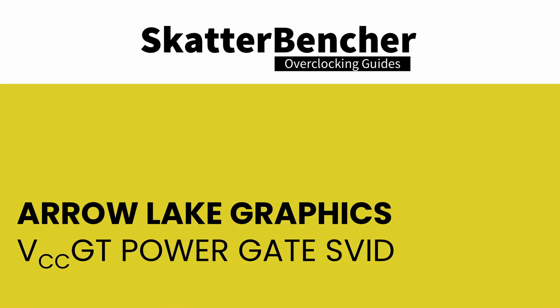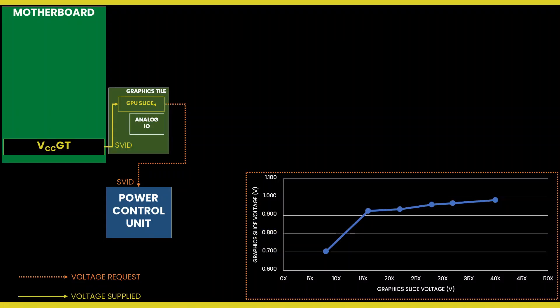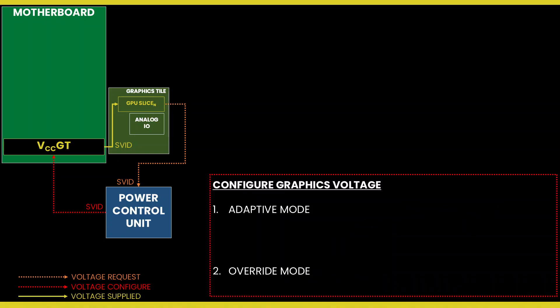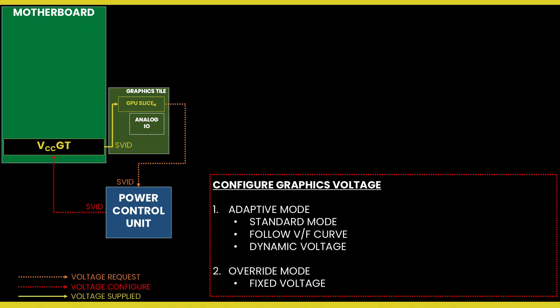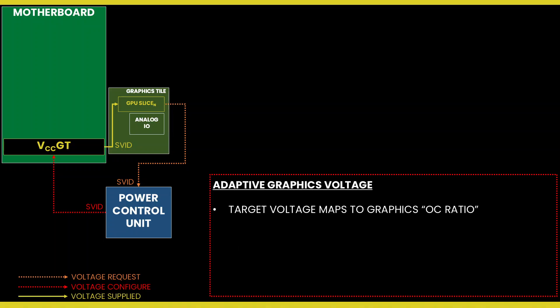Based on the GT VF curve, the integrated graphics requests an operating voltage using the ISVIT protocol from the CPU power control unit (PCU). The PCU in turn configures the VCC GT voltage rail. There are two ways to configure the graphics voltage: adaptive mode and override mode. Adaptive mode is the standard mode of operation, relying on the factory fused VF curves. Override mode specifies a single static voltage across all ratios. We can configure both modes directly in the PCU by specifying a target voltage and a voltage offset. In adaptive mode, the target voltage is mapped to the GT's OC ratio, which also matches VF.7. You can configure the adaptive voltage and OC ratio to any value, however multiple rules enforce what ratio and voltage are actually set.